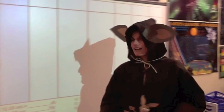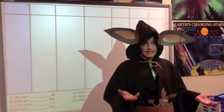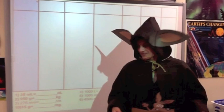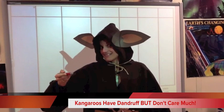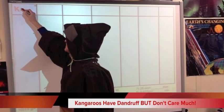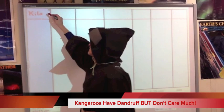Okay, the first thing we need to do, class, is fill out our metric chart. If you remember from the other day during our lesson, we talked about kangaroos and having dandruff, and they don't care much. So we need to fill out our metric chart using the metric prefixes. Remember, kangaroos — the metric prefix that 'kangaroos' stands for is kilo. The symbol was a small k.